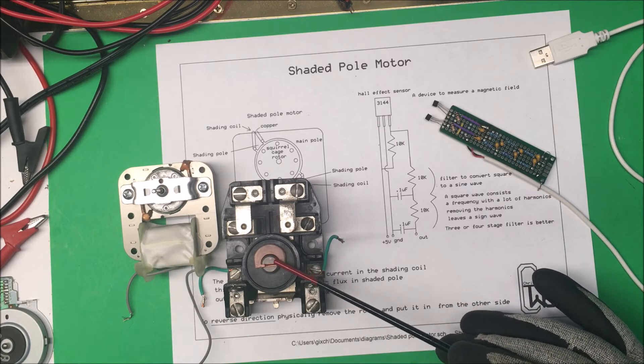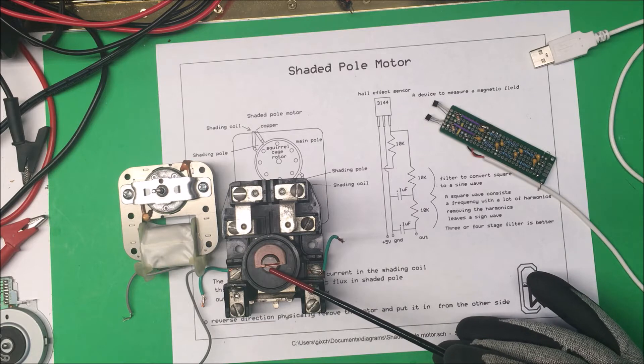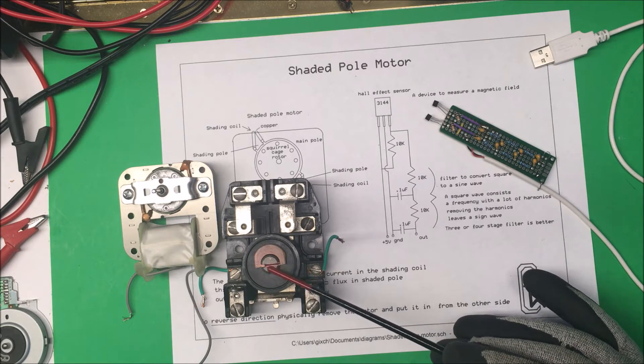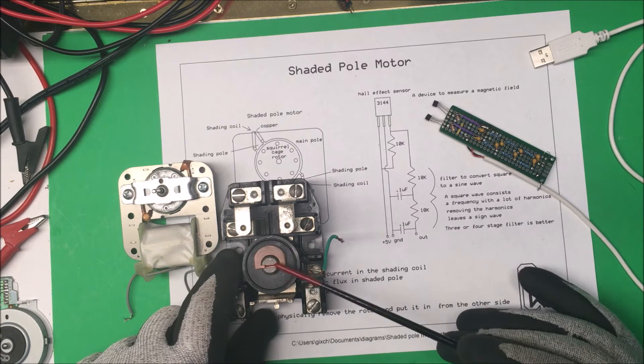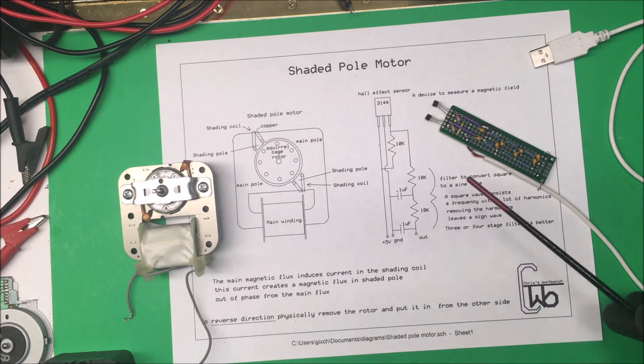So they have a shading coil here, and this pole is 90 degrees out of phase with this one here. The magnetic flux is 90 degrees out of phase - that's how that works.